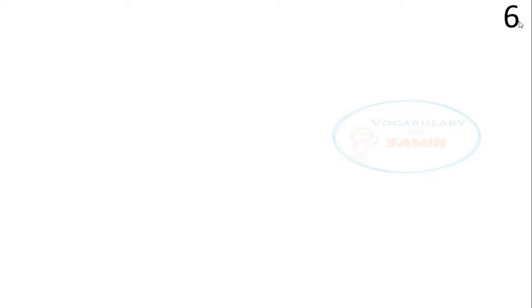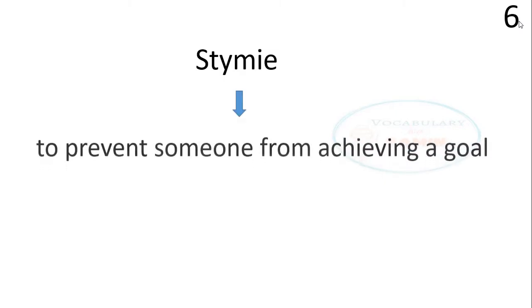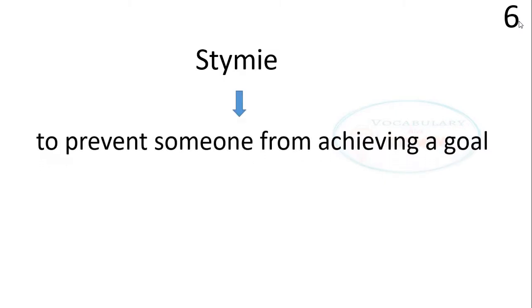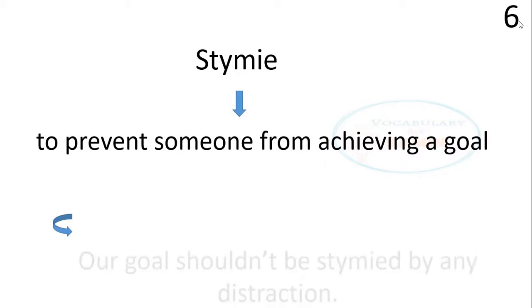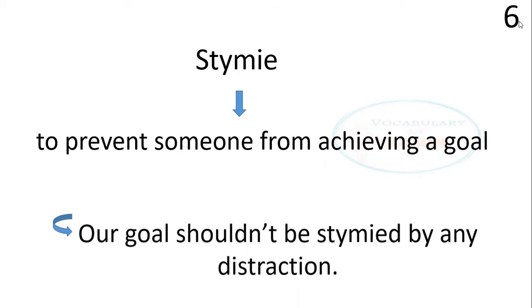Word number six is 'stymie.' Stymie means to prevent someone from achieving a goal. The sentence is: Our goal shouldn't be stymied by any distraction.